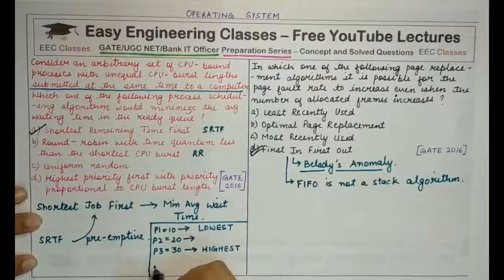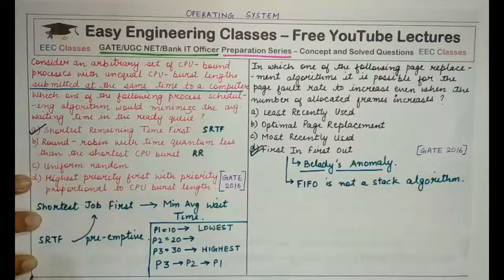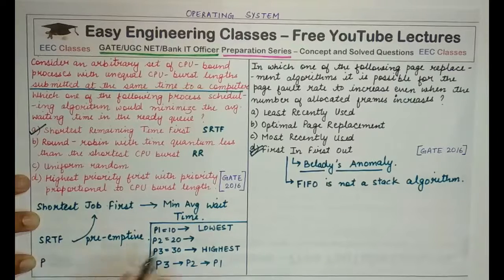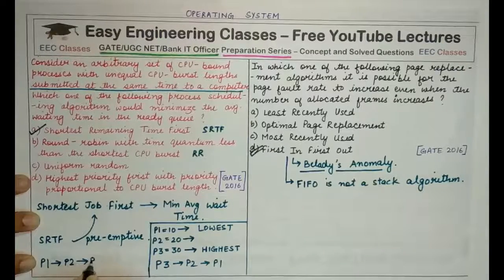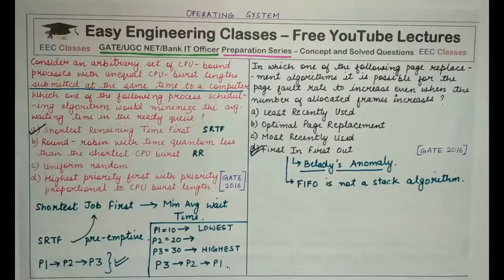Under option D (Highest Priority First), execution order would be P3, then P2, then P1. But under SRTF, since all are present at time 0, remaining times are 10, 20, and 30 respectively, so execution order would be P1, then P2, then P3. This results in a lower average waiting time compared to option D, so you can safely choose option A — SRTF.